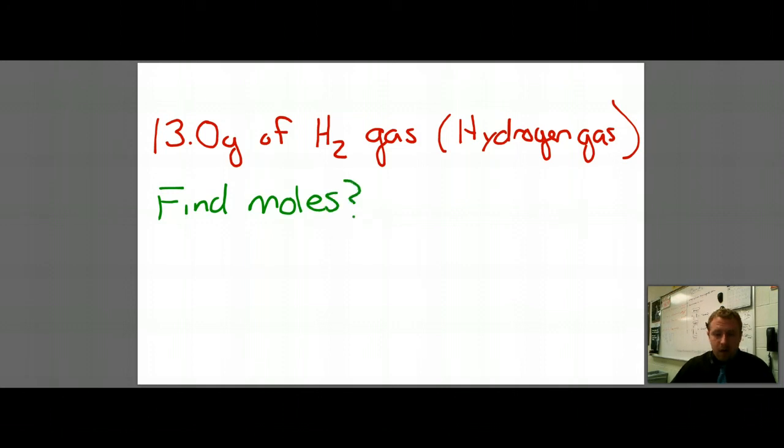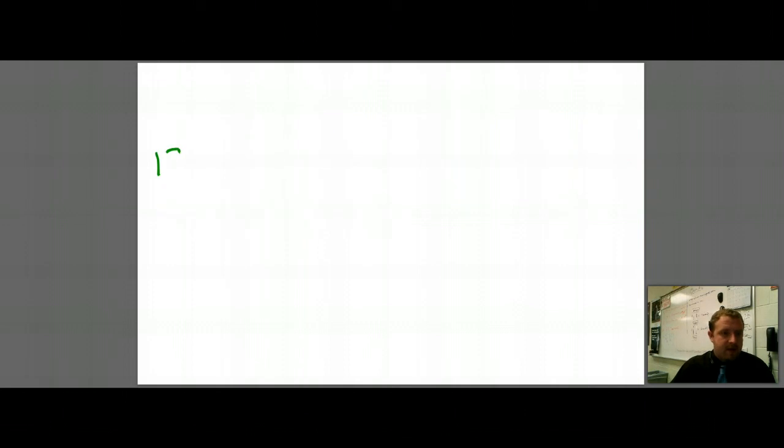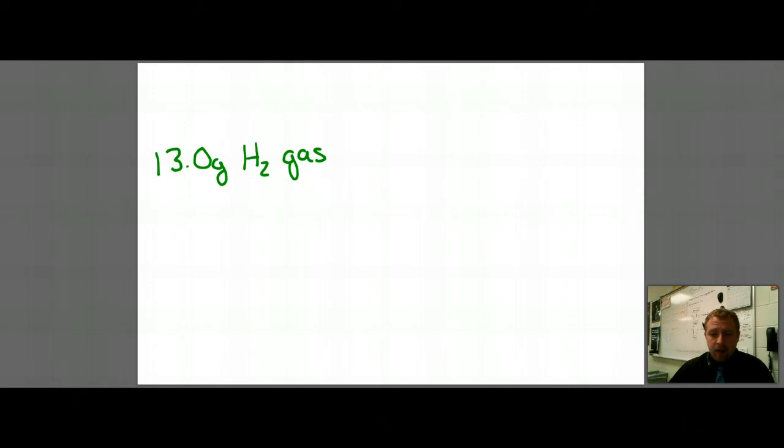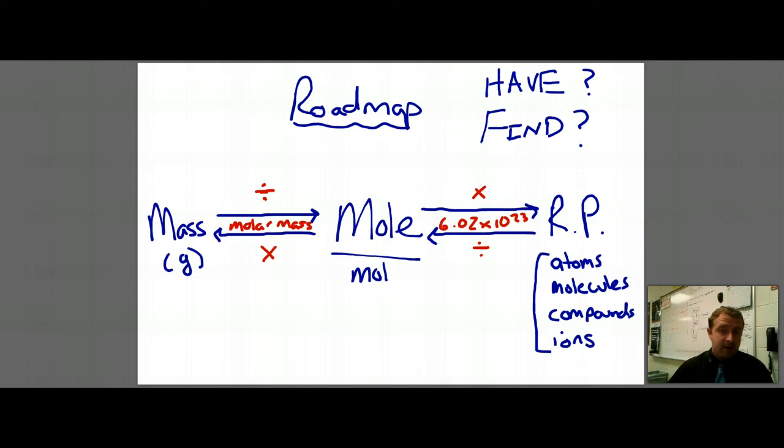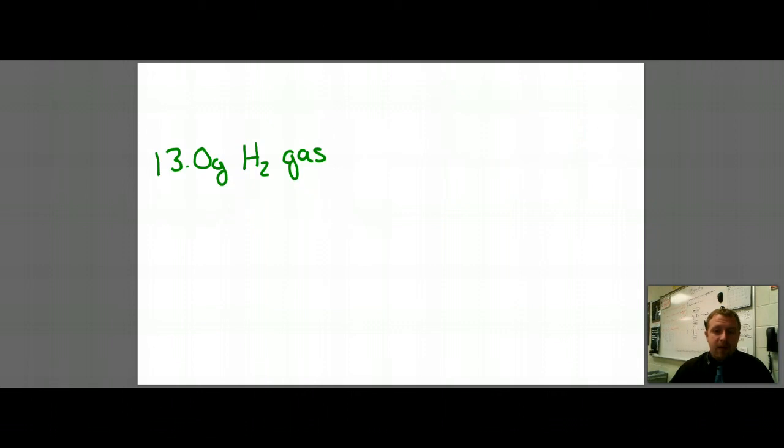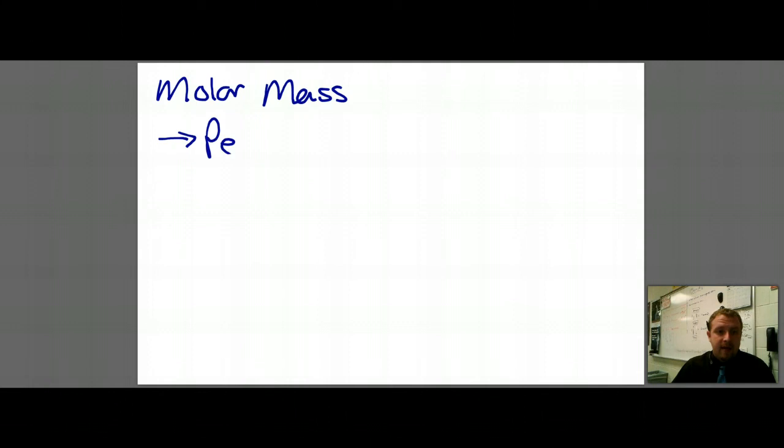So I'm going to start with what I know. I have 13.0 grams of H2 gas, and I need to find, according to my roadmap, notice how we keep going back to the roadmap. If I'm going from mass to moles, I need to know molar mass. Well, this value comes right off the periodic table. So in order to find molar mass, I need to go to my periodic table.